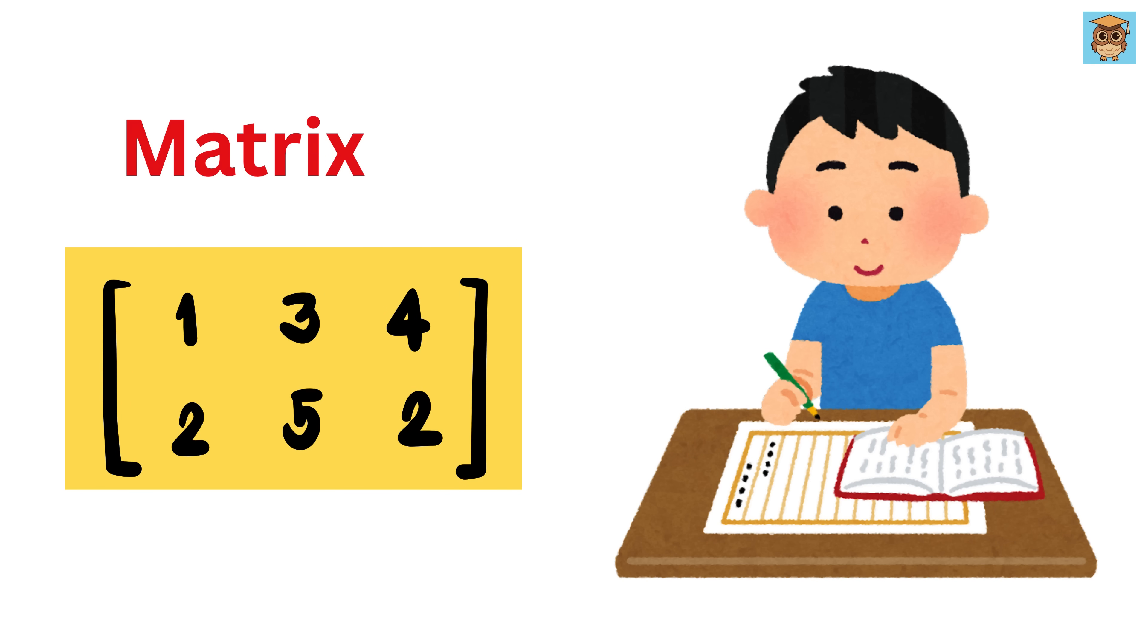A matrix is simply a rectangular grid where numbers are arranged in rows and columns. For example, if a matrix has two rows and three columns, it means there are two horizontal lines of numbers, and each line contains three numbers.